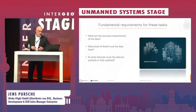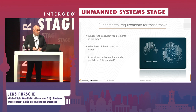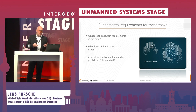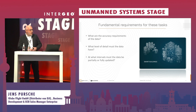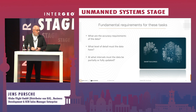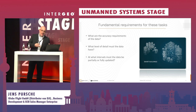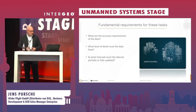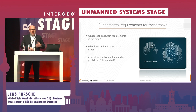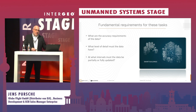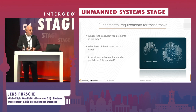At Intergeo we discussed three major points. First, what is the required accuracy for a digital twin? Second, what level of detail is needed for a digital twin in an urban space? And third, at what intervals must the digital twin be updated? When we started aerial surveying, update cycles were five to six years. Now it's around three years, and I expect we'll be talking about annual updates or updates triggered when a building is newly constructed.